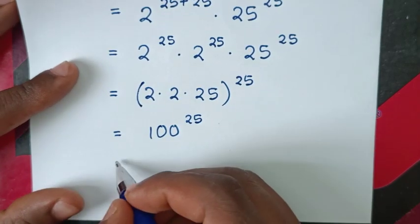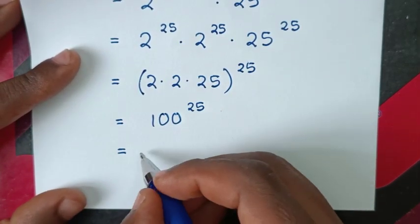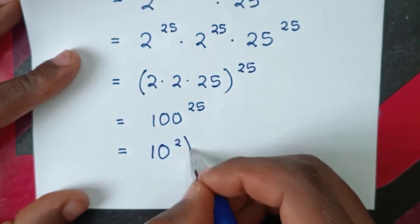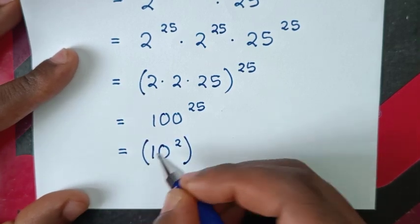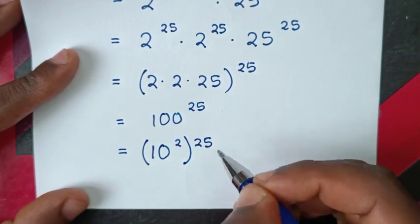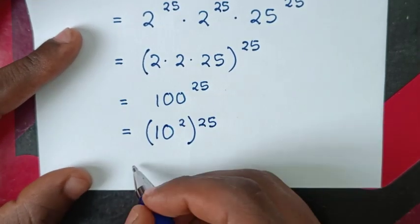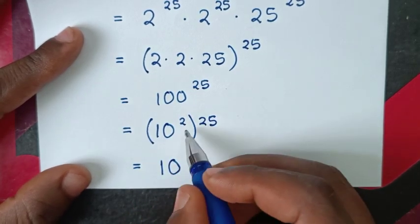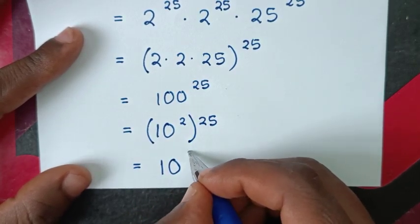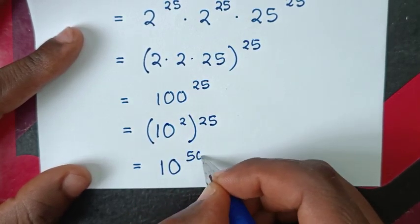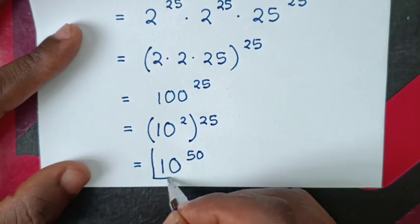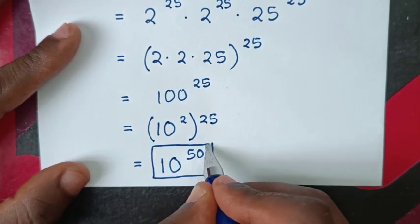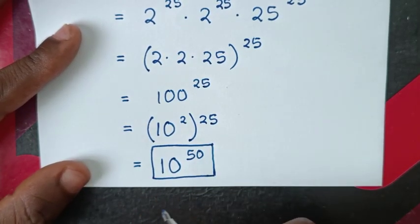Since 100^25 equals (10^2)^25, this gives 10^50. So 10 to the power of 50 is our final answer — the same result as in Method 1.